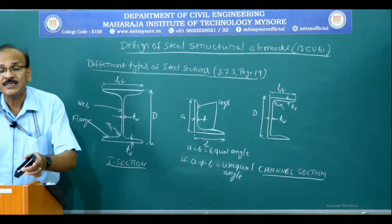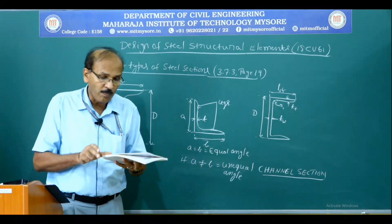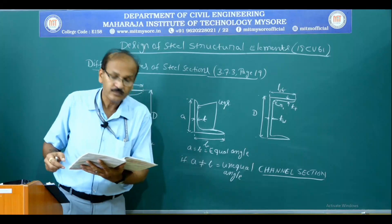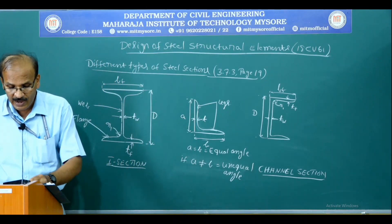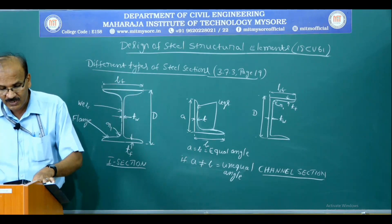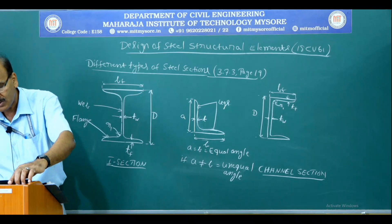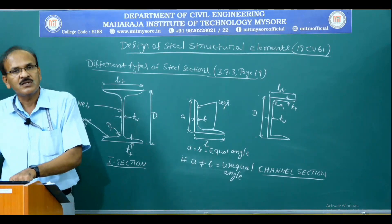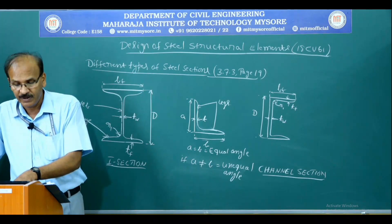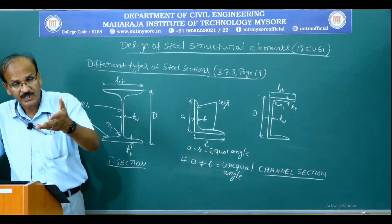If you open the steel table — this is the steel table by K.V. Ron — open the first page. On the left column it says ISJB, ISLB etc., and on the top it says 'Rolled Steel Beams.' We call it rolled steel beams because that is the process in which the section is manufactured. It says dimensions and properties, and in the leftmost column it lists ISJB 150, ISJB 175 and other sections.